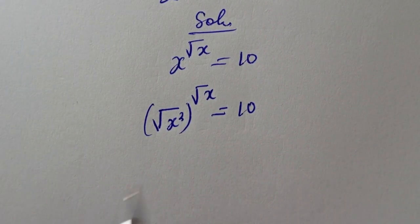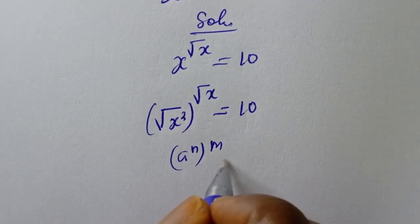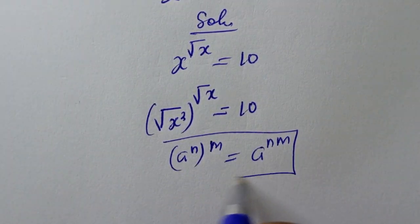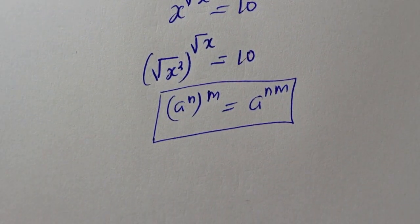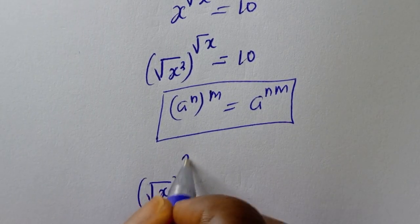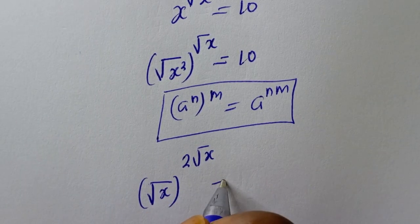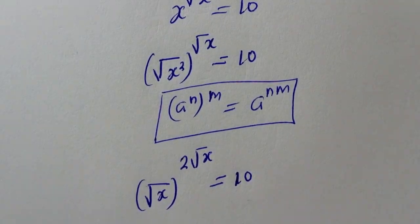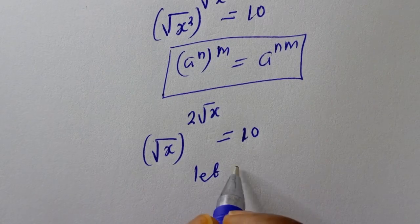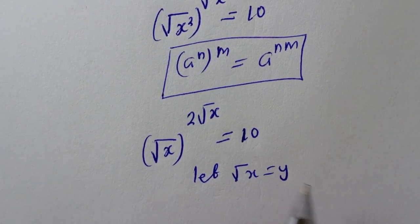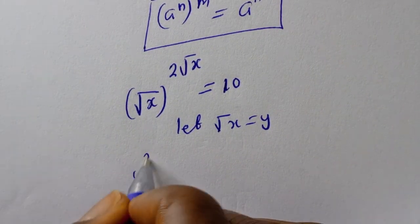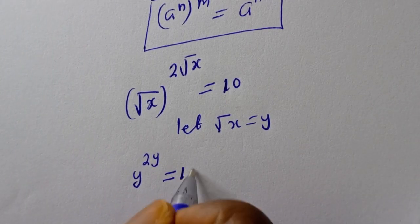Now if you have a raised to power n, to the power of m, it is equal to a raised to power nm. Then s can be written as square root of s squared, to the power of square root of s. This gives us square root of s to the power of 2 times square root of s, which is equal to 10. Now let square root of s equal y, so this becomes y to the power of 2y is equal to 10.